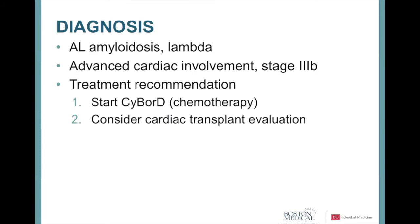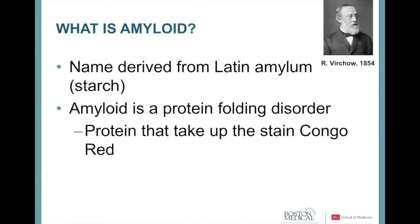Unfortunately, she had advanced cardiac involvement — stage 3B — by the time she reached us. We immediately initiated chemotherapy, and because of her relatively young age and serious heart impairment, we considered referral for cardiac transplantation. Amyloid has been known since 1854, when pathologist Rudolf Virchow saw a substance under the microscope he thought was sugar-related; he named it 'amyloid' from the Latin word for starch.